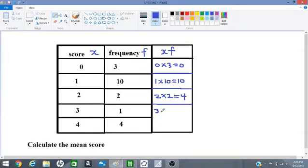3 times 1, we get 3. 4 times 4, we get 16.